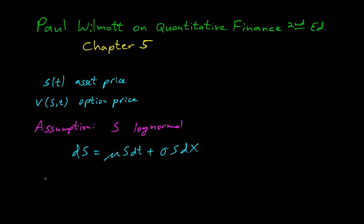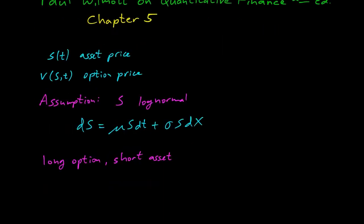The fundamental idea of Black-Scholes is that we go long the option and short the asset. In particular, we take a position pi: long the option, then short some proportion of the asset. The proportion we call delta, which is our hedging factor.